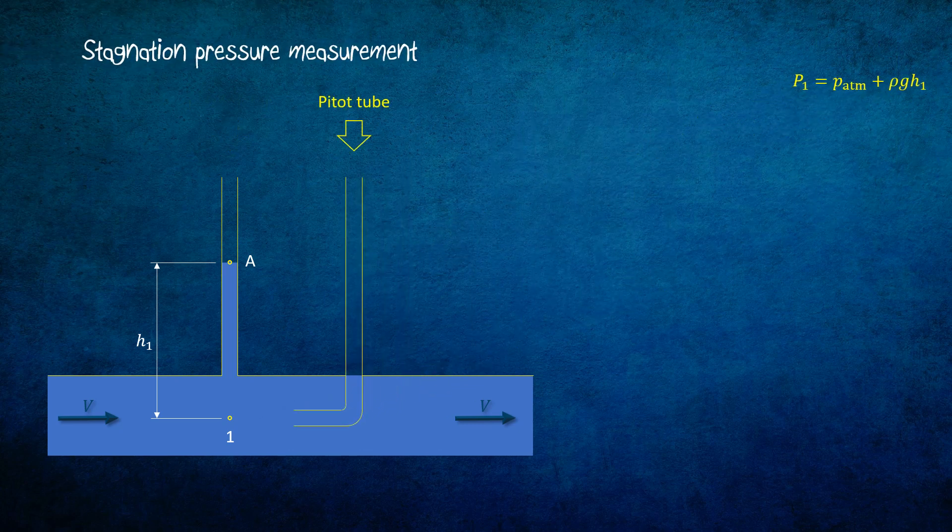Stagnation pressure at a point can be measured by means of a pitot tube. As the opening of the tube is facing the flow, more pressure pushes the fluid to enter the tube up to a higher level than A. Let's say at point B. It is at a height of h2 from point 2. Point 2, which is at the inlet of the pitot tube, is called stagnation point. Here the velocity is zero. The stagnation pressure P2 can be calculated, knowing the height h2 and the atmospheric pressure at B.